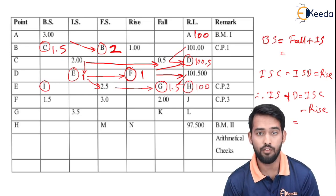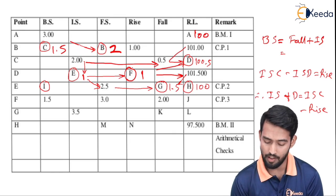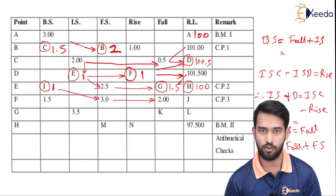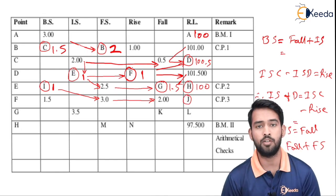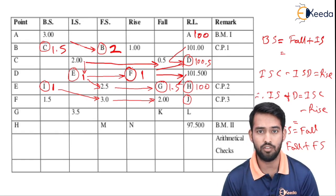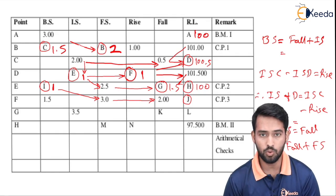Now we have to calculate I — that is Bs. We know Fs and we know the fall. The formula for Bs: Bs minus Fs is equal to fall. We know fall and Fs, so the answer of Bs will be 1. Next we have to calculate the missing reading J, which is nothing but RL. By knowing the RL of H and the rise or fall of the next point, we can calculate J. RL of J is equal to 100 minus 2, which is 98.